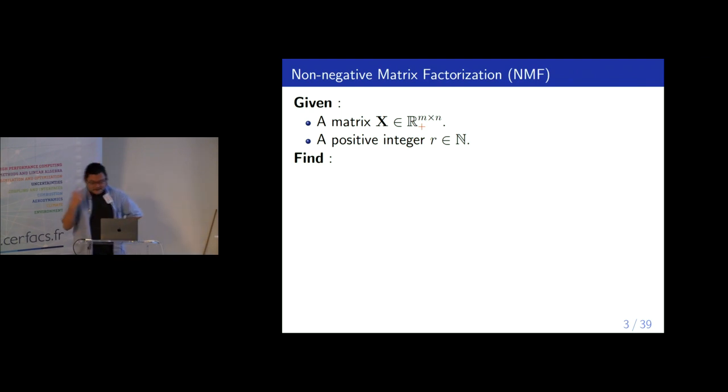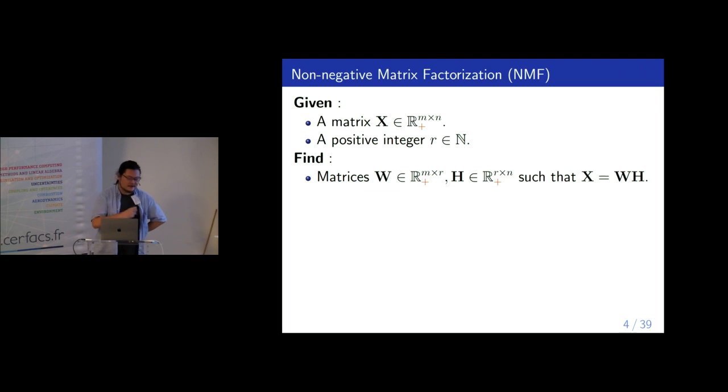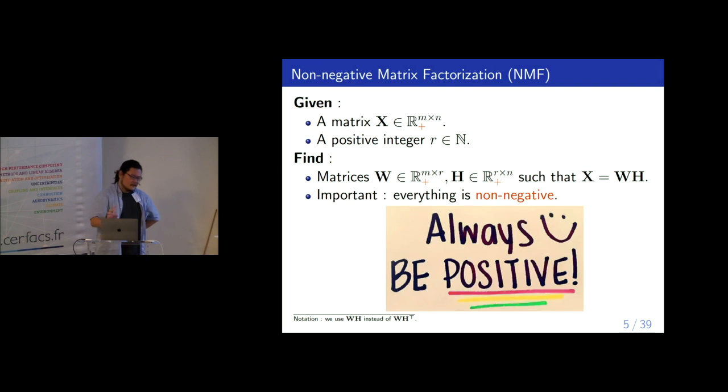So, what is NMF? Very simple. You are given X and R, which is a matrix and a rank, a factorization rank. And what you want to find is W and H, the variable factorization matrices, such that this equality is true. The important thing is, this is non-negative matrix factorization. So everything is non-negative, meaning that the elements in W, H, and also X are all non-negative. That means only zero or positive is allowed.